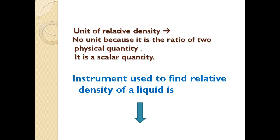Now we will think about the unit of relative density. As discussed earlier when finding unit of density, you think about the formula. The formula of relative density is density of substance upon density of water at 4 degrees Celsius. The unit of density of substance is kg per meter cube, and similarly the denominator is also kg per meter cube, so both cancel out — there is no unit. Relative density is a unitless scalar quantity because it is the ratio of two physical quantities with the same unit.